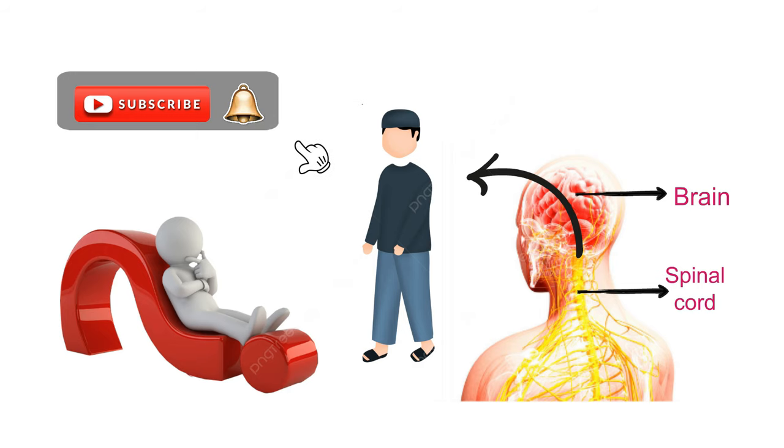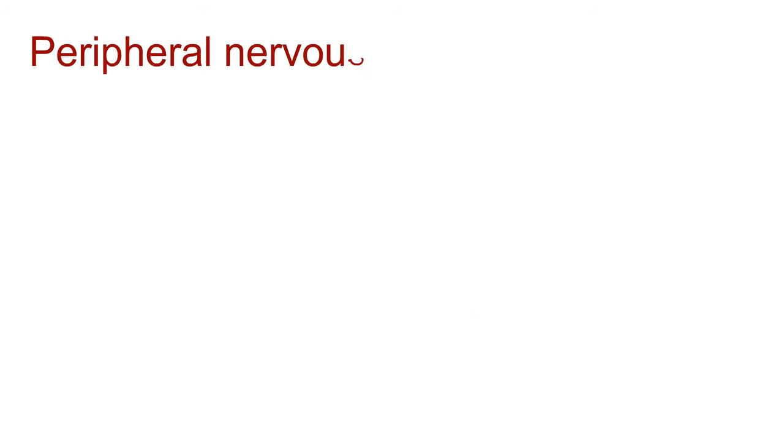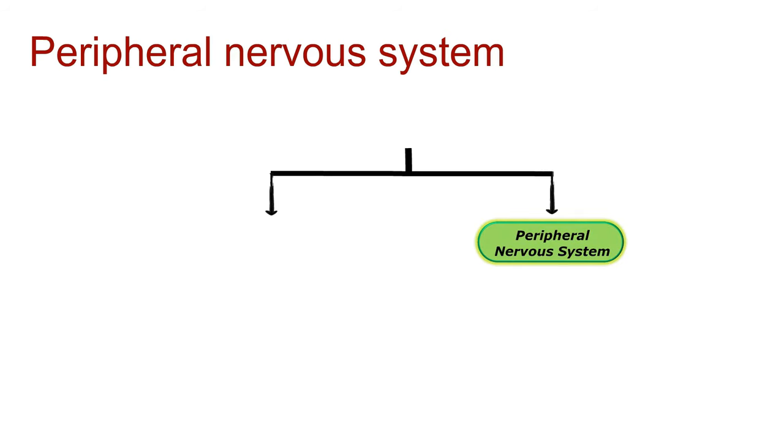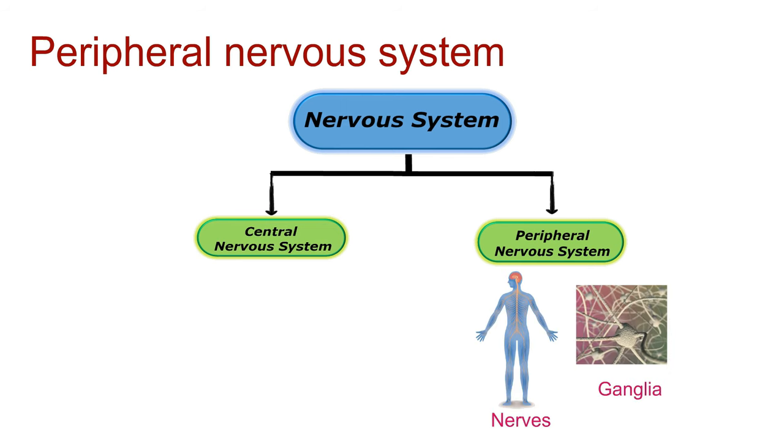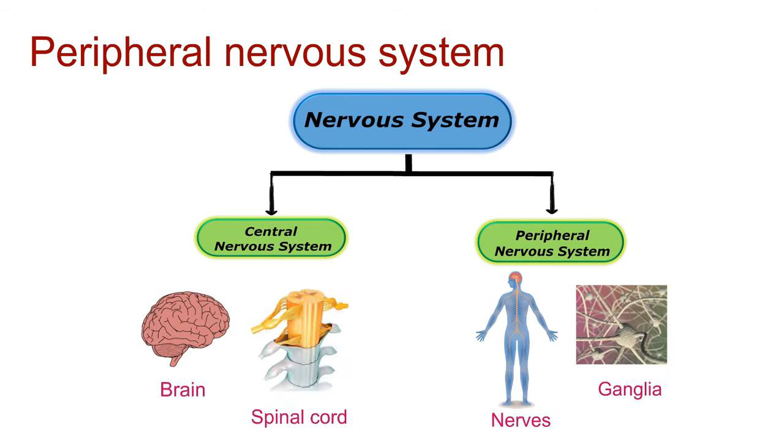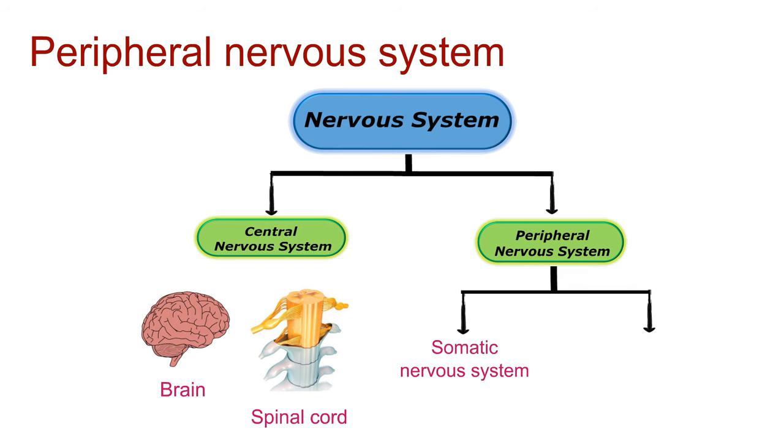First things first, what exactly is the peripheral nervous system? Well, it's one of the two main divisions of the nervous system, working in harmony with the central nervous system. The peripheral nervous system consists of all the nerves and ganglia outside the brain and spinal cord. It can be further divided into the somatic nervous system and the autonomic nervous system.